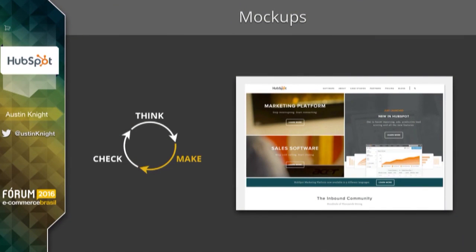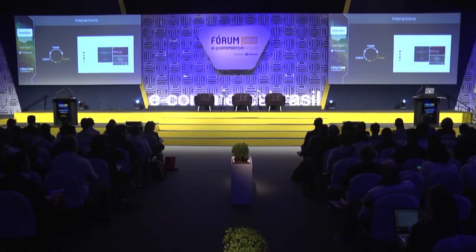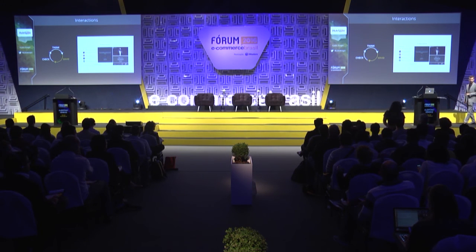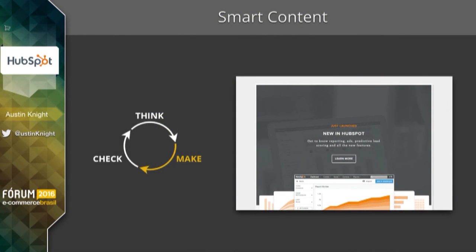Then we moved into higher fidelity, creating mock-ups, adding photos, colors, and typography. Then we started to map out interactions, because these designs aren't static — when a mouse moves over the design, how does it change? We started to create those interactions. And then we used smart content. Something proprietary to our platform is that we have smart content, which allows us to detect who a user is and deliver them a custom experience based off of who they are, tailored to get them to convert at the highest rate. So everybody in this room could go to the website, and we're going to detect who they are and deliver slightly different content and designs based off of who you are as an individual.